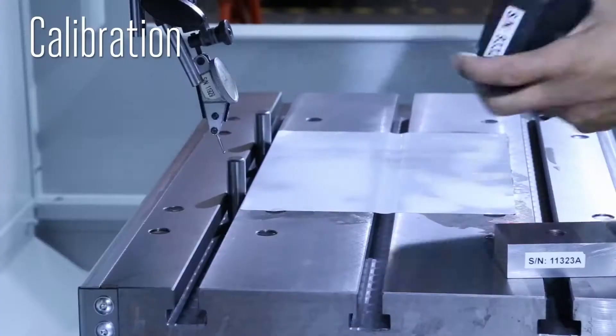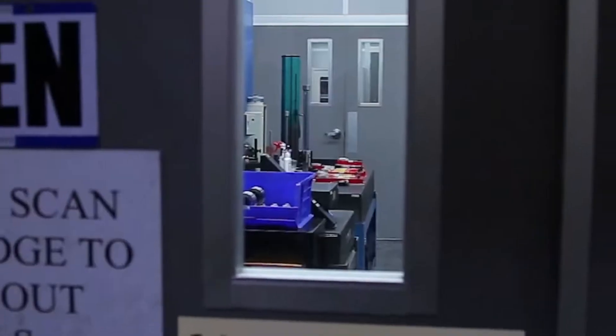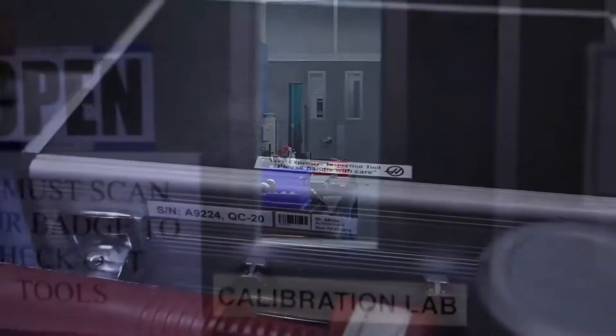At Haas, we routinely calibrate the company's supplied indicators. It's a best practice that keeps our indicators accurate. You'll find the next recalibration date printed on the indicator's case.